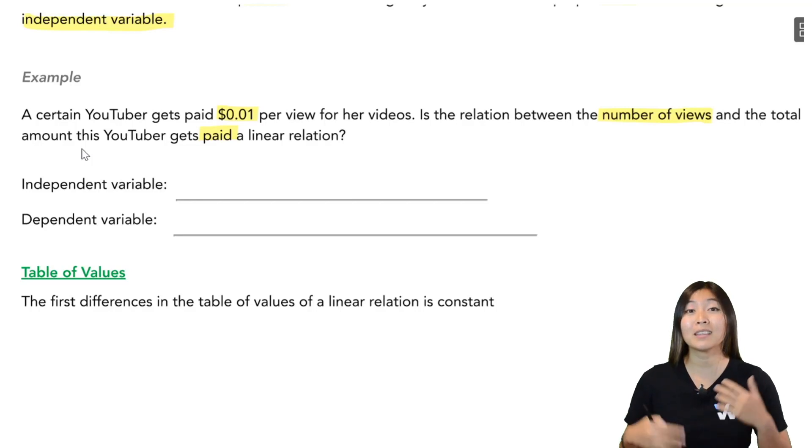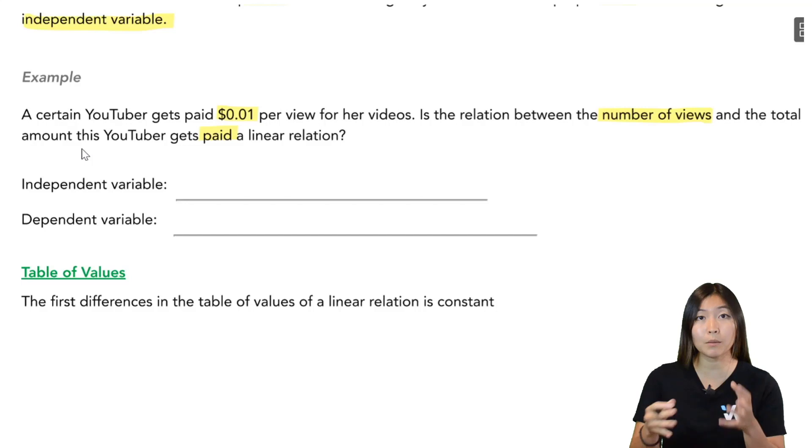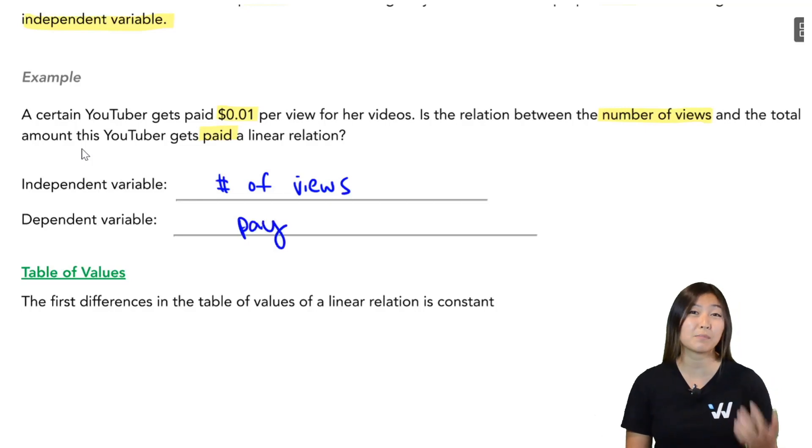Well, the amount that they get paid depends on how many views they have. So we pick the number of views and then we see how much they get paid based on those views. So the independent variable here is the number of views. The dependent variable is the pay. How much this YouTuber gets paid depends on the views.